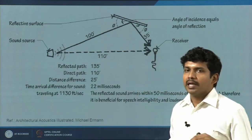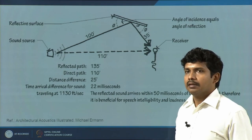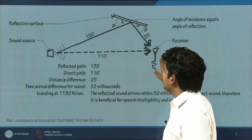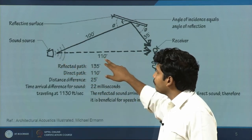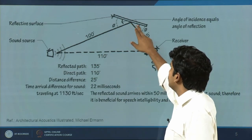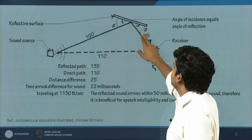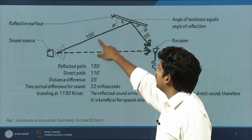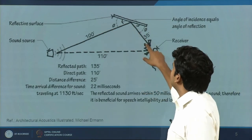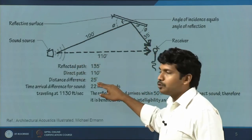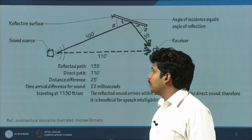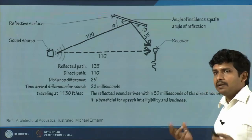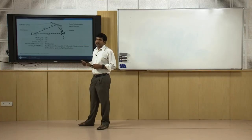We are trying to clarify the source path differentials. Say there is a direct sound at 110 foot distance, the reflected path is 35 foot with a 35-degree angle. The incident angle equals reflected angle. This difference works out to be 25 foot - if you convert it you get 22 milliseconds - which means it is an early reflection that is actually enhancing your direct sound signal.